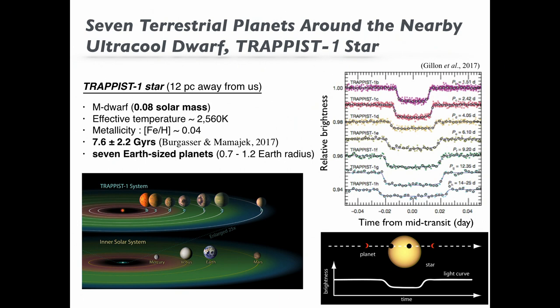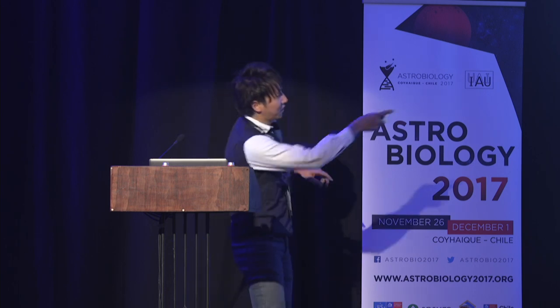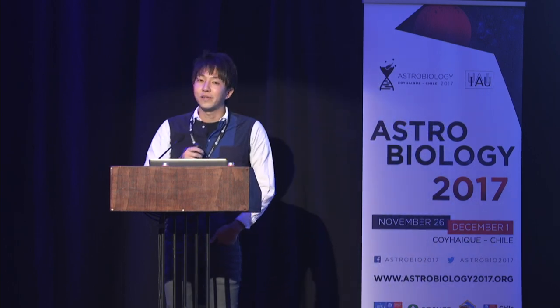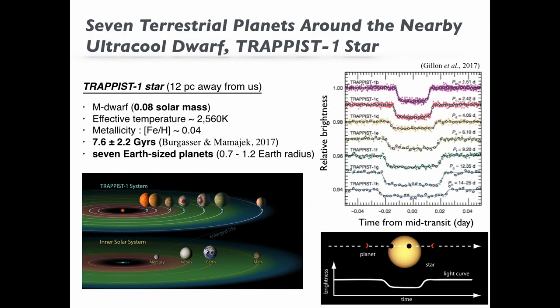Recently, transit photometry on the ground has reported that this system has seven Earth-sized planets, as shown in this video. The reason why this cool small star is so popular among us now is that three of the seven planets orbiting TRAPPIST-1 are potentially habitable. We all dream that there would be ocean, glaciers, lakes, and mountains on the surface.